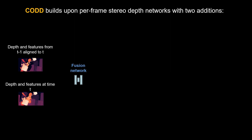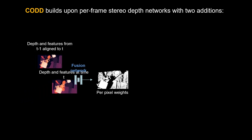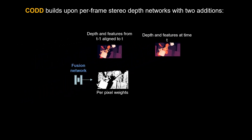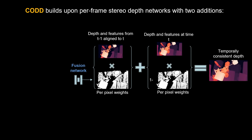We then introduce a fusion network, which regresses per-pixel weights given the aligned estimates. We then use the learned fusion weights to aggregate the estimates, generating temporally consistent depth.